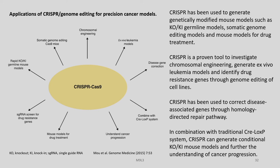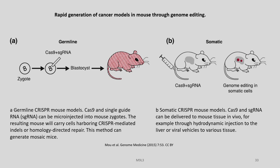CRISPR can be used to correct disease-associated genes through the homology-directed repair pathway, and in combination with the traditional Cre-lox system, CRISPR can generate conditional knockout and knockin mouse models and further the understanding of cancer progression. Rapid generation of cancer models in mouse through genome editing is possible using CRISPR-Cas9.